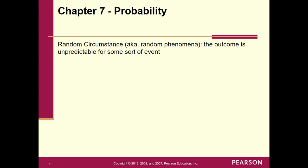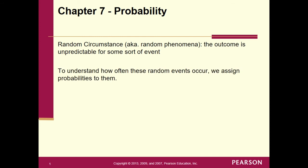The outcome is unpredictable for some sort of event. We have some sort of thing that's occurring and we don't know what the final result is going to be. So like we flip a coin — we flip a coin and we don't know if it's going to turn up heads or tails. Because we don't know, to understand how often these random events occur, we assign probabilities to them.